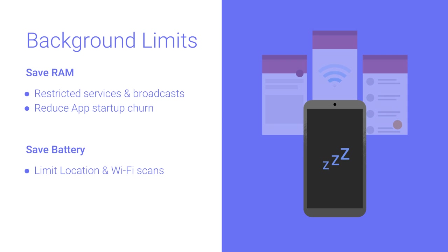Let's dig into some of the changes we're introducing. Background limits on the save-RAM part means we want to restrict services and broadcasts and reduce the amount of churn happening on the device. On the save-battery side, we're looking to improve background location and Wi-Fi scan rates — reducing them and making them more of a trickle than the really bursty events we're seeing happening in the ecosystem.